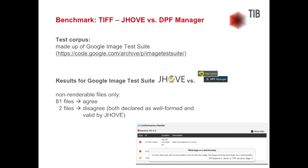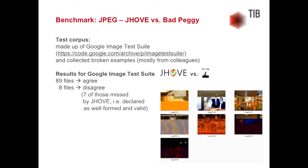For TIFF, the test suite used was the Google Image Test Suite. We ran JOV against DPF Manager, focusing on non-renderable files — the absolute worst cases. The two tools agreed on 81 files, both declaring them invalid. The bad news is they disagreed on two files, and the even worse news is that JOV was wrong — JOV said those two files were well-formed and valid, meaning they would pass your TA check and go straight into your archive, even though you can't render them.